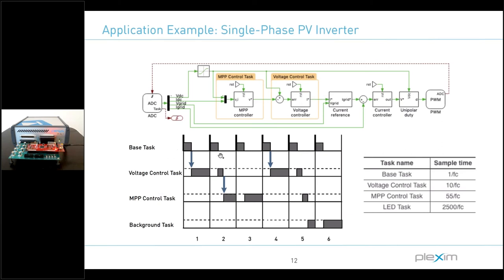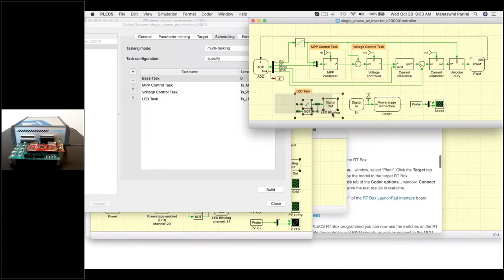If the base task is still executing when a second control task interrupt is received, the processor will halt and an assertion will be generated. Similar behavior occurs if a low-priority task does not complete by the time it is scheduled to execute again. Assertions can be monitored using CCS debug tools, but you can also detect them visually by including a periodic LED blink in your model — if the LED is not blinking after building the model on the MCU, this means the MCU has halted.